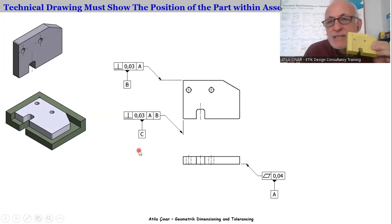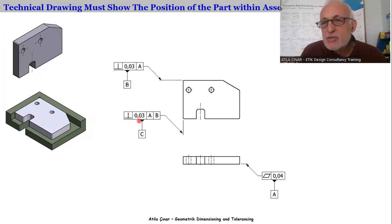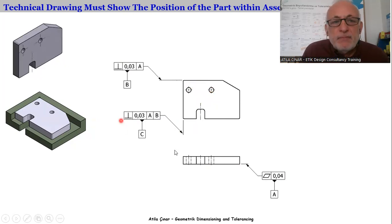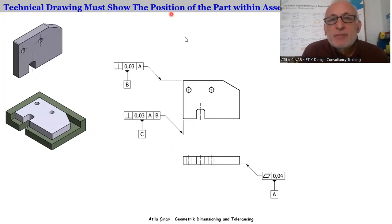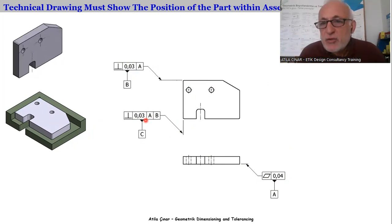Datums A, B, and C together are called the datum reference frame of the part. They are qualified because they are not ordinary features of the part — they are special reference features. They are used as references and qualified by considering the production conditions, measuring conditions, and the function of the part.